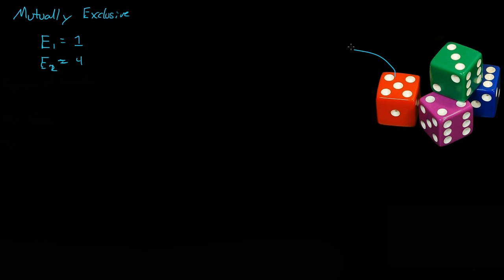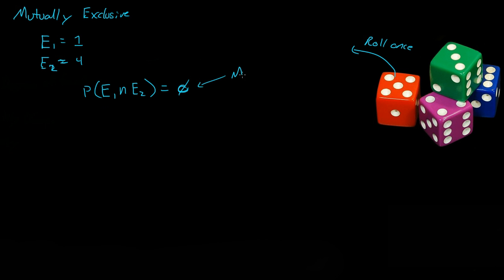That means if we were to roll a dice once, we cannot get a 1 and a 4 at the same time. We can show that mathematically by saying the probability of Event 1 intersect Event 2 is equal to null. Event 1 does not intersect with Event 2. Remember, intersection means when does Event 1 and Event 2 occur together. So this means they are mutually exclusive.